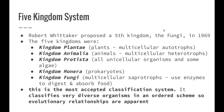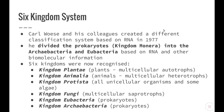This is the most accepted classification system — it classifies very diverse organisms in an ordered scheme so evolutionary relationships are apparent. A sixth kingdom was added by Carl Woese and his colleagues in 1977, who created a classification system based on RNA. He divided the prokaryotes (kingdom Monera) into Archaebacteria and Eubacteria based on RNA and other biomolecular information. The six kingdoms now recognized are: Plantae, Animalia, Protista, Fungi, Eubacteria, and Archaebacteria — with Eubacteria and Archaebacteria divided based on the RNA found within them.